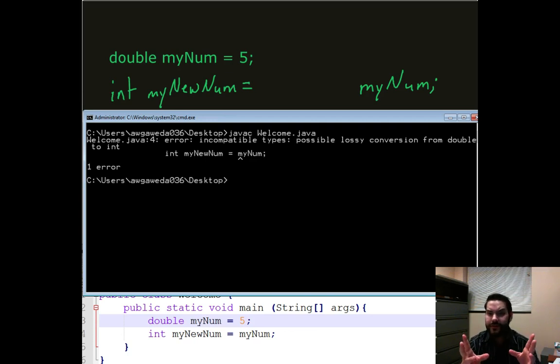We just got a new error message. Incompatible types, possible lossy conversion from double to integer. I don't like errors. What does that mean?